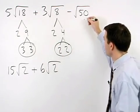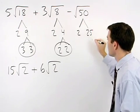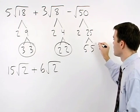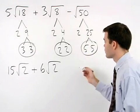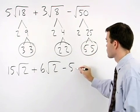In the last term, 50 factors as 2 times 25, and 25 is 5 times 5. So a 5 comes out of the radical, and we have minus 5 times the square root of 2.